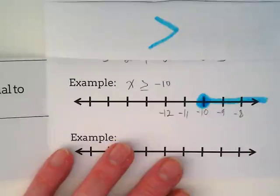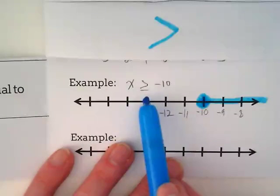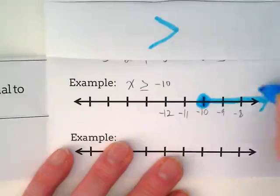Again, this is why order matters. If you're thinking about the inequality symbol is similar to the front of our arrow, it's telling you what direction to point.